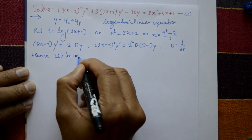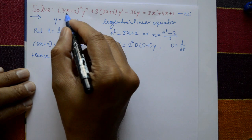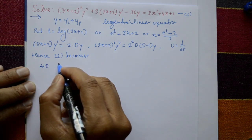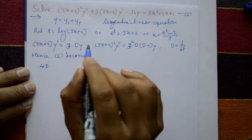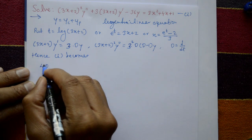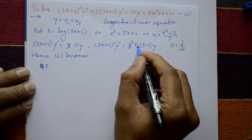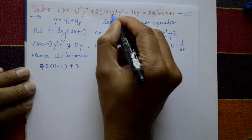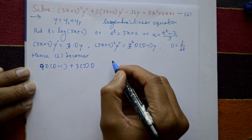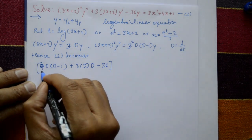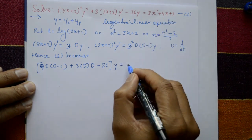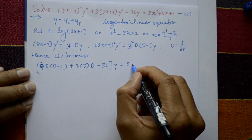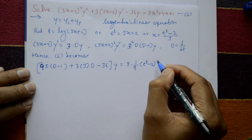Substituting, equation number 1 becomes: (3x+2)²y'' = 9D(D-1)y, plus 3(3x+2)y' = 3·3·Dy = 9Dy, minus 36y. On the right-hand side, substitute x = (e^t - 2)/3, so x² = (1/9)(e^t - 2)². The term 8x² becomes (8/9)(e^t - 2)², expanded as a minus b whole square.